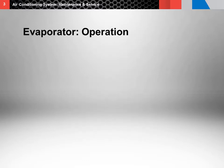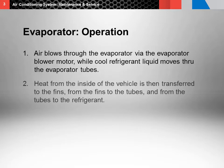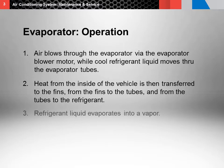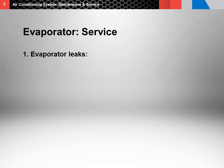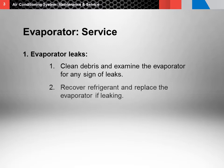Now, let's talk about the evaporator. Air blows through the evaporator via the evaporator blower motor, while cool refrigerant liquid moves through the evaporator tubes. Heat from the inside of the vehicle is then transferred to the fins, from the fins to the tubes, and from the tubes to the refrigerant. Refrigerant liquid then evaporates into a vapor. Clean debris and examine the evaporator for any signs of leaks. Recover refrigerant and replace the evaporator if it is leaking.